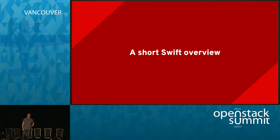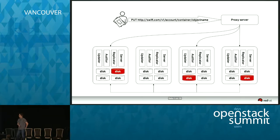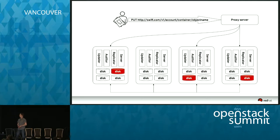A short overview about Swift itself. Swift is an object storage, which basically means you don't have a block device or a file system that you're mounting. All requests to the storage system are done using HTTP REST API calls — a PUT or a GET request with your data. Your user has a URL and wants to store a document, for example, and sends a PUT request to a specific URL made out of an account name, a container name, and an object name. This is sent to the proxy server.